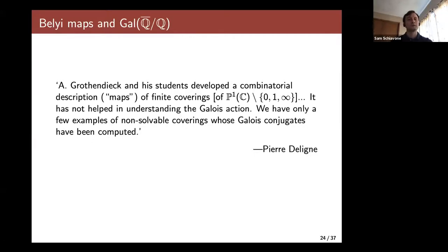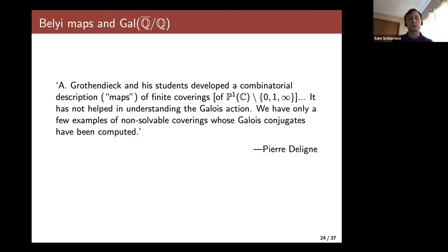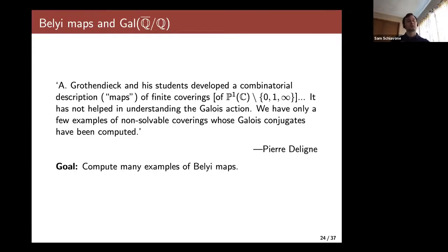Now we move into the computational portion. Grothendieck was enchanted by Belyi's theorem and wondered if we could understand the absolute Galois group via its action on Belyi maps and dessins. Pierre Deligne was less optimistic: 'Grothendieck and his students developed a combinatorial description of finite coverings of P1 minus three points. It has not helped in understanding the Galois action. We have only a few examples of non-solvable coverings whose Galois conjugates have been computed.' Our goal is to fix this — compute more examples of non-solvable coverings and study their Galois conjugates.